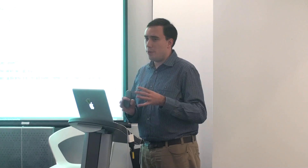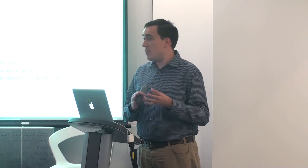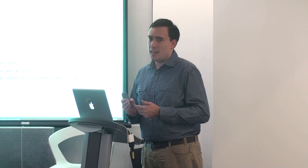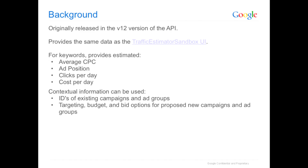This one takes it a little further: given a bid and given how competitive that keyword is, how many clicks can I expect? The nice thing about it too is it can use contextual information, so you can pass in these proposed keywords.